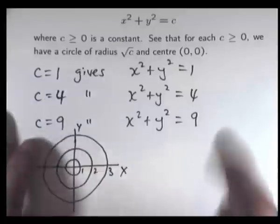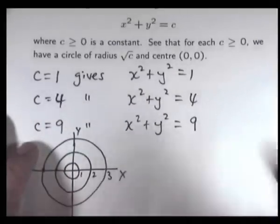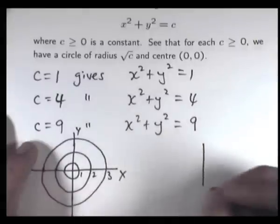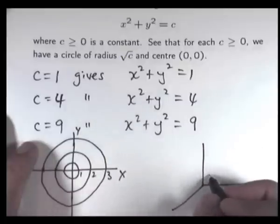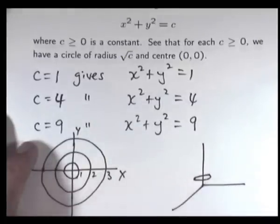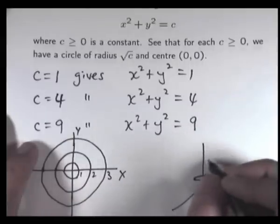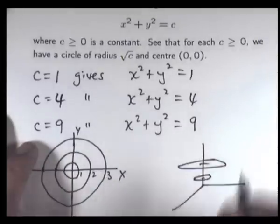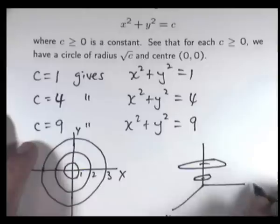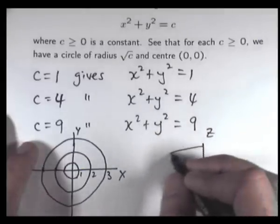What do these look like in three-dimensional space? Remember, this constant C is the height above or below the XY plane that the circle lies in. So the circle for C equals 1 lies at height 1; for C equals 4 we go up to height 4 on the Z-axis; and for C equals 9 we go even higher to height 9.